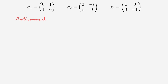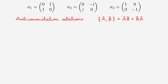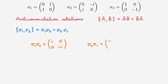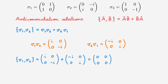Finally, let's consider the anticommutation relations between the Pauli matrices. Remember that the anticommutator of two matrices or operators A and B is equal to AB plus BA. We'll consider the anticommutator of sigma 1 and sigma 2: expanding gives sigma 1·sigma 2 plus sigma 2·sigma 1. We already established that sigma 1·sigma 2 = i, 0, 0, -i, and sigma 2·sigma 1 = -i, 0, 0, i. Adding these matrices together gives the zero matrix. So the anticommutator of sigma 1 and sigma 2 is equal to 0.